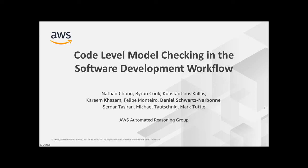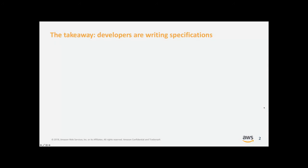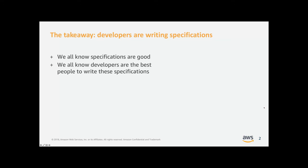Today we're going to be talking about a formal verification engagement where we saw some really unique interactions with the development team and some really unique successes that we haven't seen before. The takeaway is that specifications are really the most important part of a formal verification engagement — it's the hardest thing to get right. I don't think I need to convince an ICSE audience that specifications on code are a good thing, and that developers are the best people to write those specifications. They're the ones who best understand the code and have a mental model for how it should work.